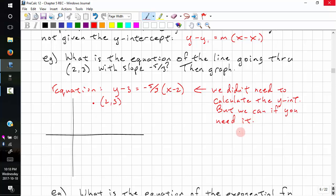So y minus 3 equals negative 5 over 3. We expand this side. Negative times a negative is positive. And then we have 10 over 3, 5 times 2.